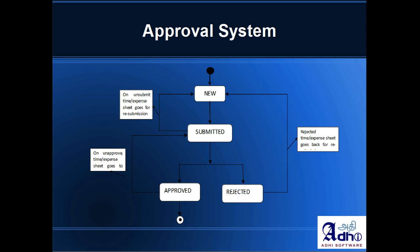The approver can approve a timesheet, and when it's approved, it gets the approved state. The approver can also reject a submitted timesheet if they see something wrong or some incorrect values, or if they simply don't want to approve it. When it's rejected, it goes back to the team member for further correction and resubmission, and an email notification will also be sent to the team member.